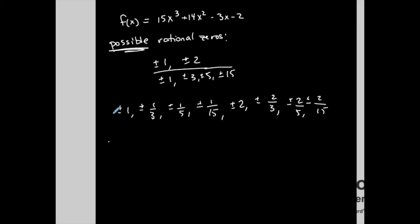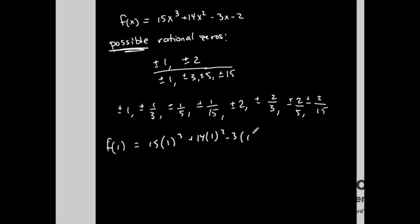Let's start by trying x equals 1. When I plug in 1: 15 times 1 cubed plus 14 times 1 squared minus 3 times 1 minus 2. That gives me 15 plus 14 minus 3 minus 2, which is not zero. The remainder theorem and factor theorem say that if a value is a zero, the remainder must be zero. This is not working, so 1 is out.